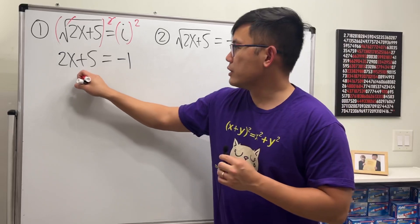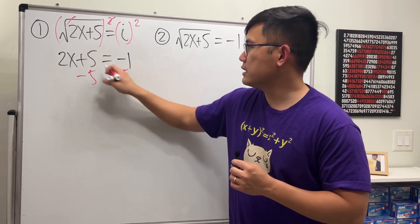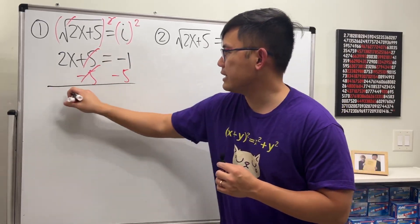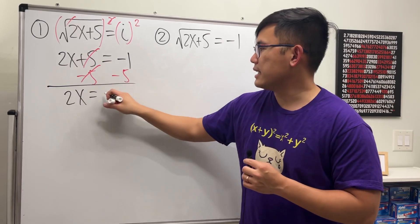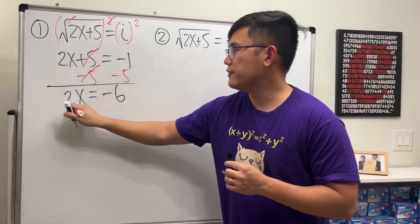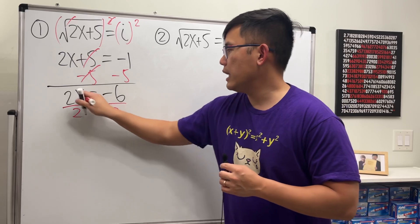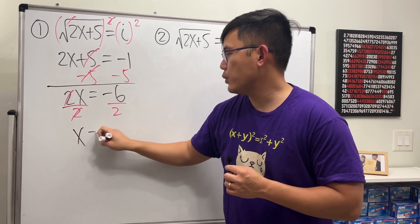Then we can do the usual business: minus 5 on both sides, so 2x equals negative 6. Then divide both sides by 2 and we see x is equal to negative 3.